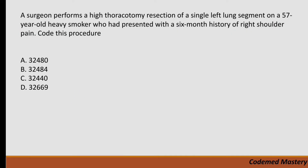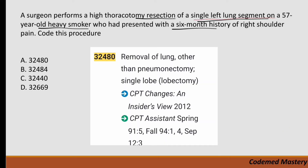Let's solve this question: a surgeon performs a high thoracotomy resection of a single left lung segment on a 57-year-old heavy smoker who presented with a six-month history of right shoulder pain. Code this procedure. Option A is 32480 — removal of lung other than pneumonectomy, single lobe (lobectomy). But in our case they removed a single lung segment — that's segmentectomy, not lobectomy — so we eliminate option A.